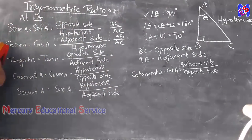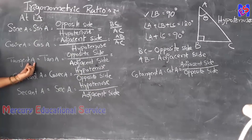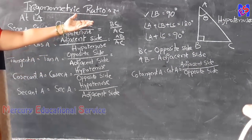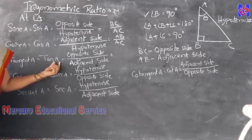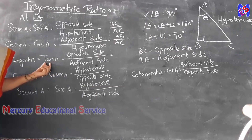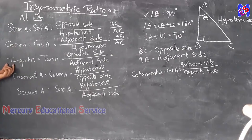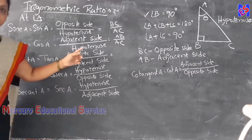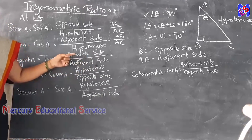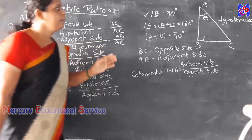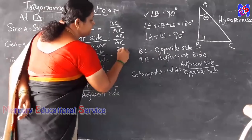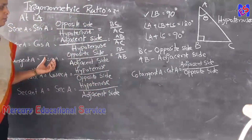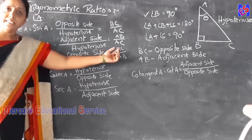Third ratio: tangent A, written in short form as tan A. We write tan A when taking angle at A, and tan C when taking angle at C. The formula of tan A is opposite side divided by adjacent side. In the triangle, the opposite side is BC and the adjacent side is AB. So tan A equals BC by AB.